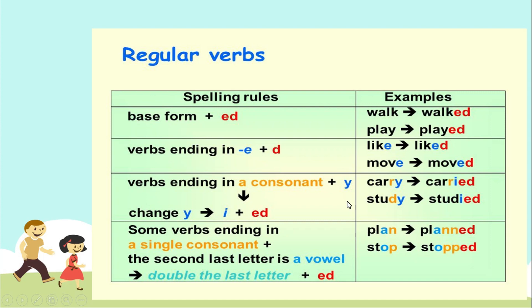Para los verbos que terminan en CH o SH, debemos agregarle solamente la E y la D.